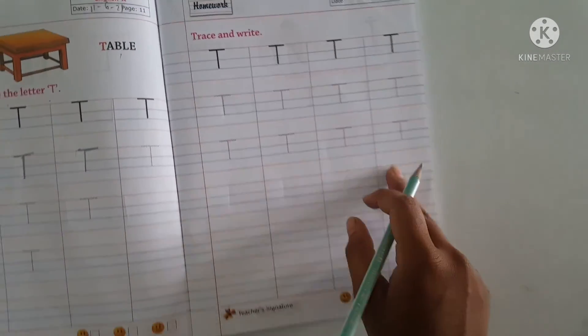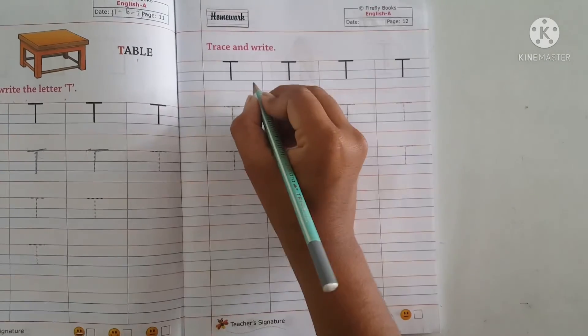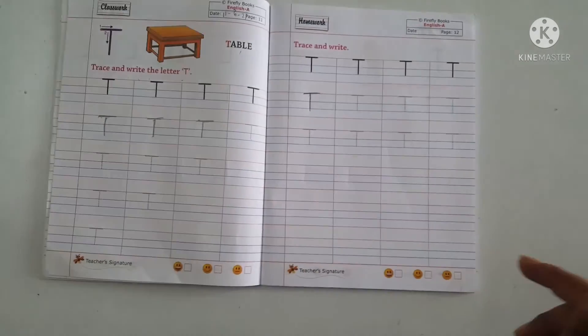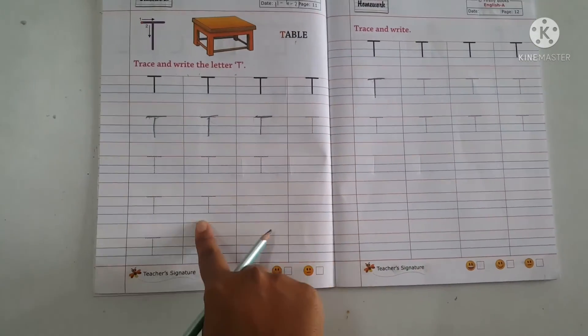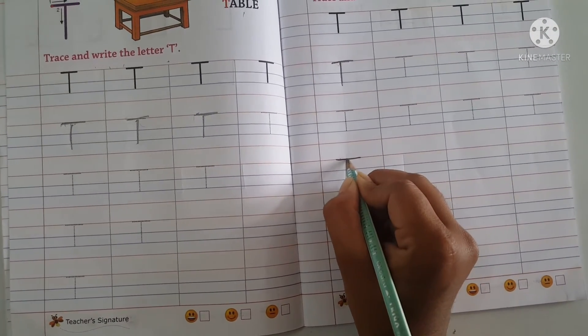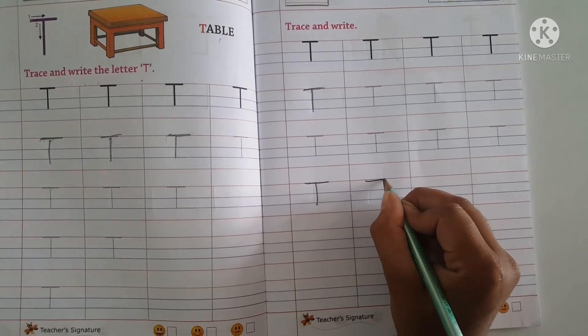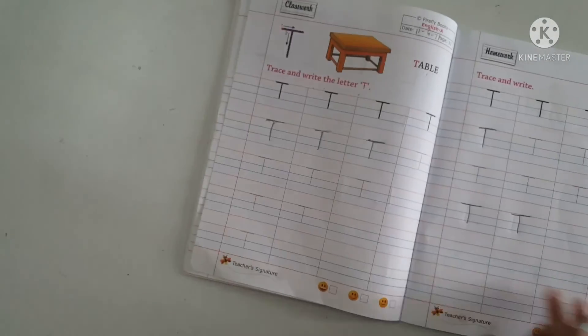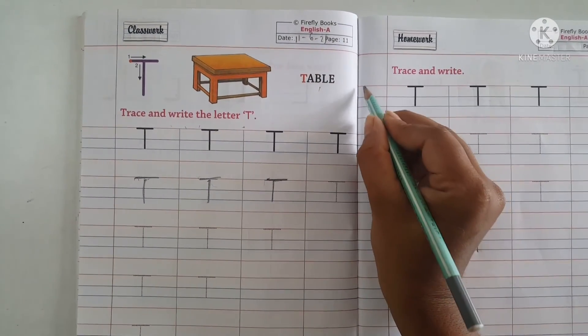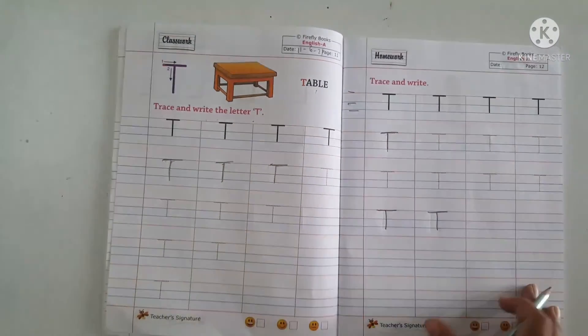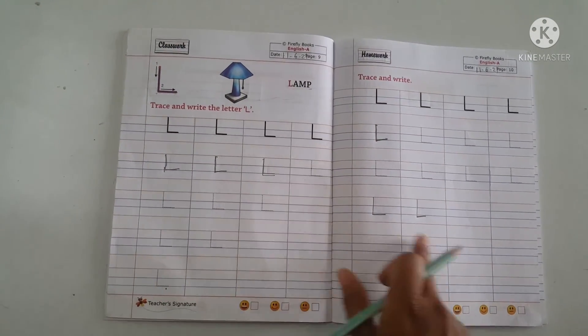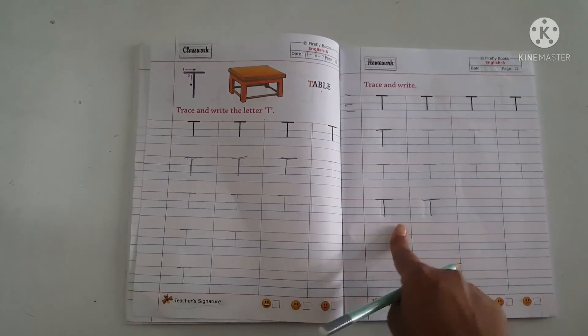See page number 12. Letter T, T for table. Trace letter T. Write letter T three lines. One, two and three. Use three lines. So complete the homework, L and T. Thank you.